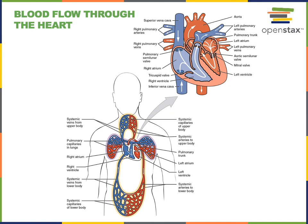The heart is really two separate pumps connected to two separate circuits of blood vessels: the pulmonary circuit and the systemic circuit. The pulmonary circuit refers to the blood vessels of the lungs, as well as the arteries transporting blood from the heart to the lungs and the veins transporting blood from the lungs back to the heart. The systemic circuit refers to the rest of the blood vessels of the body.